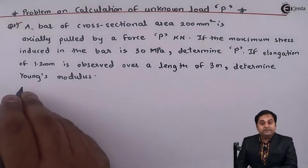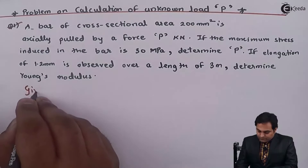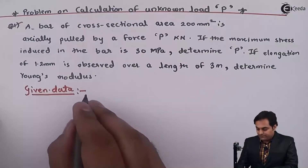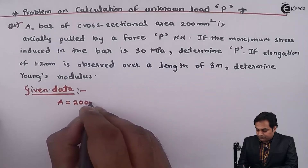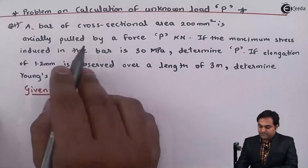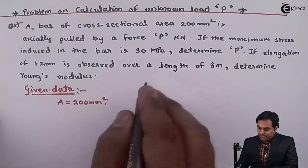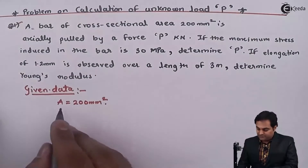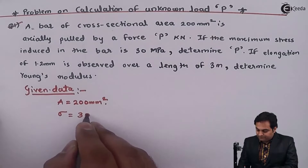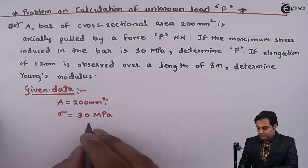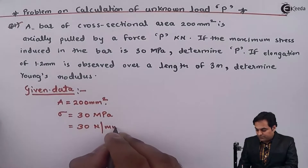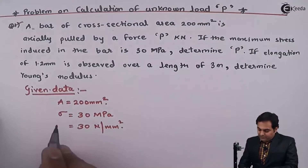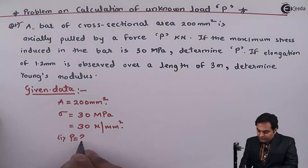Whatever is given, I'll write that first in the form of data. A bar of cross-sectional area A = 200 mm² is pulled by a force of P kilonewton, so P is the unknown force. Maximum stress induced in the bar is 30 megapascal, so sigma = 30 megapascal, which is 30 Newton per mm² because 1 megapascal equals 1 Newton per mm². We have to find the value of the unknown load.